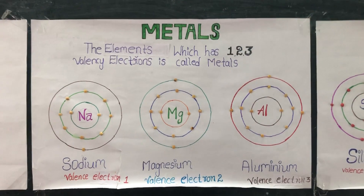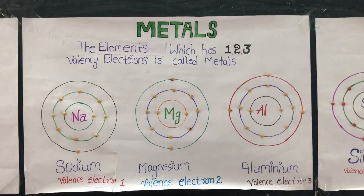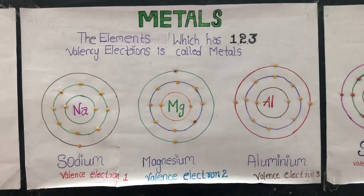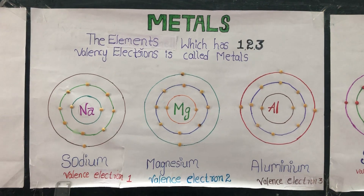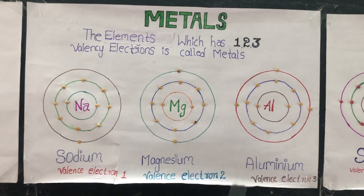The elements which have 1, 2, or 3 valency electrons are called metals. Here the examples are sodium, magnesium, and aluminium.